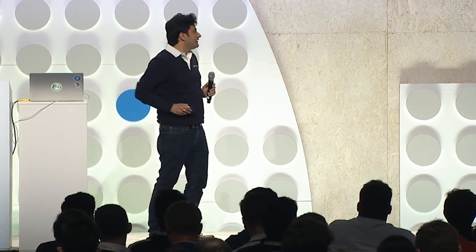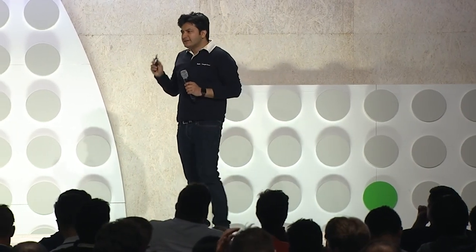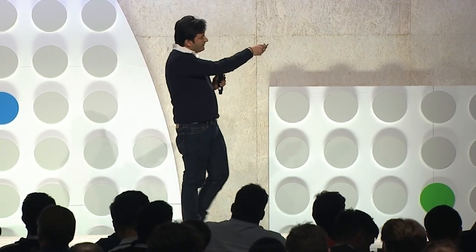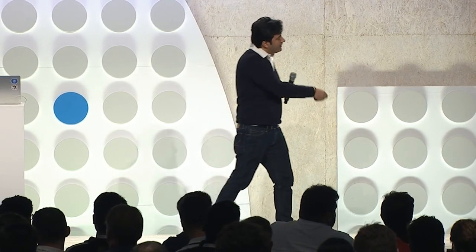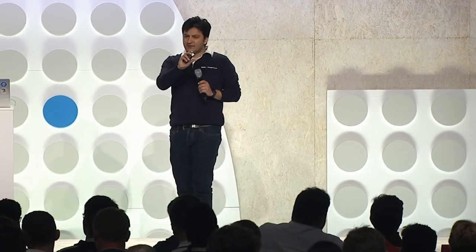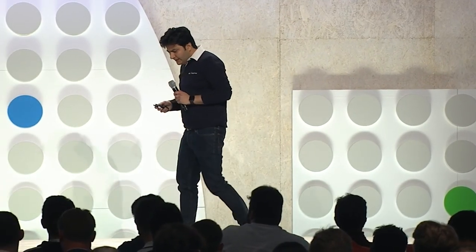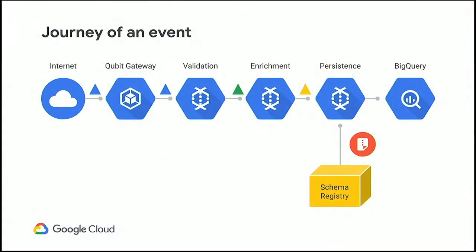After enrichment, this event is pushed forward to our next Dataflow — the persistence Dataflow. The persistence Dataflow makes sure that this particular product event enters the right table in the right dataset. The schema registry makes a cameo appearance again here — this time it's responsible for giving us the BigQuery-specific schema that we can use to translate our product event into a table row type, and look up meta information like the partitioning columns for BigQuery. This completes our event's journey, starting from the browser, traveling through our various Dataflows, and entering BigQuery, our data warehousing solution.